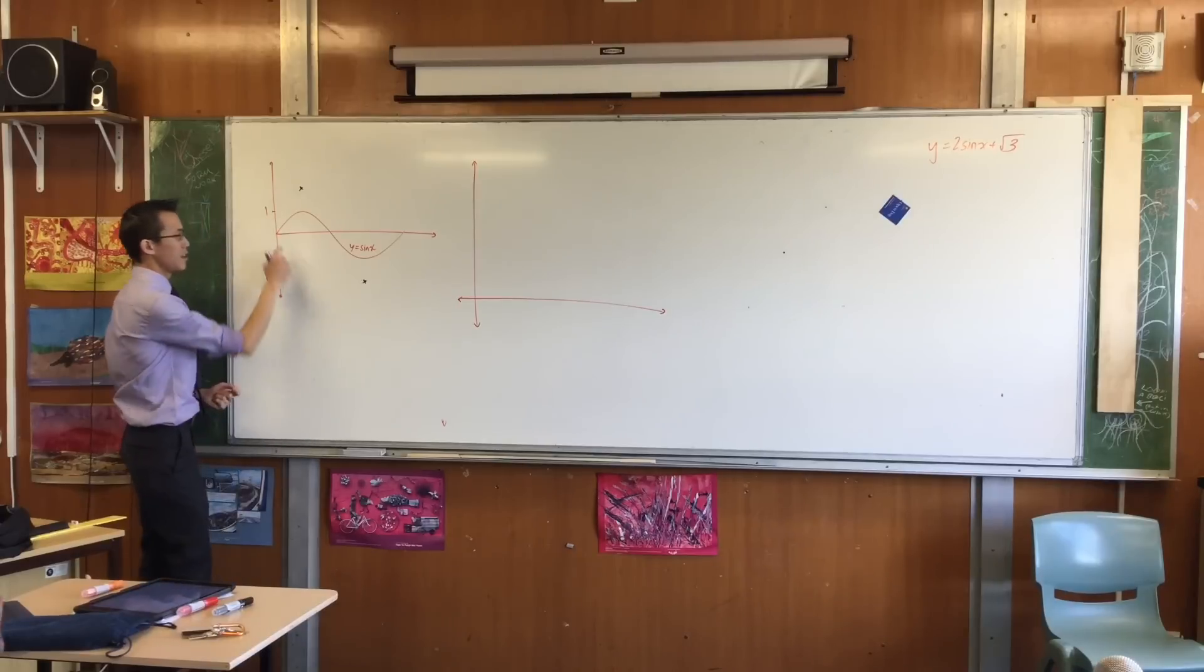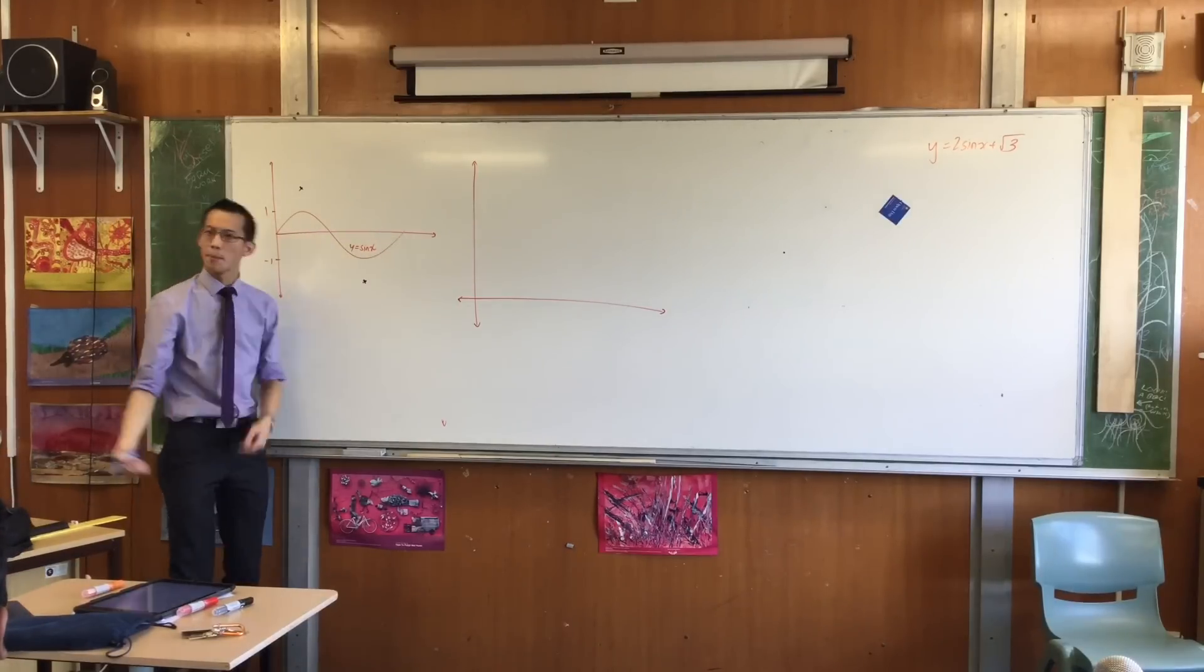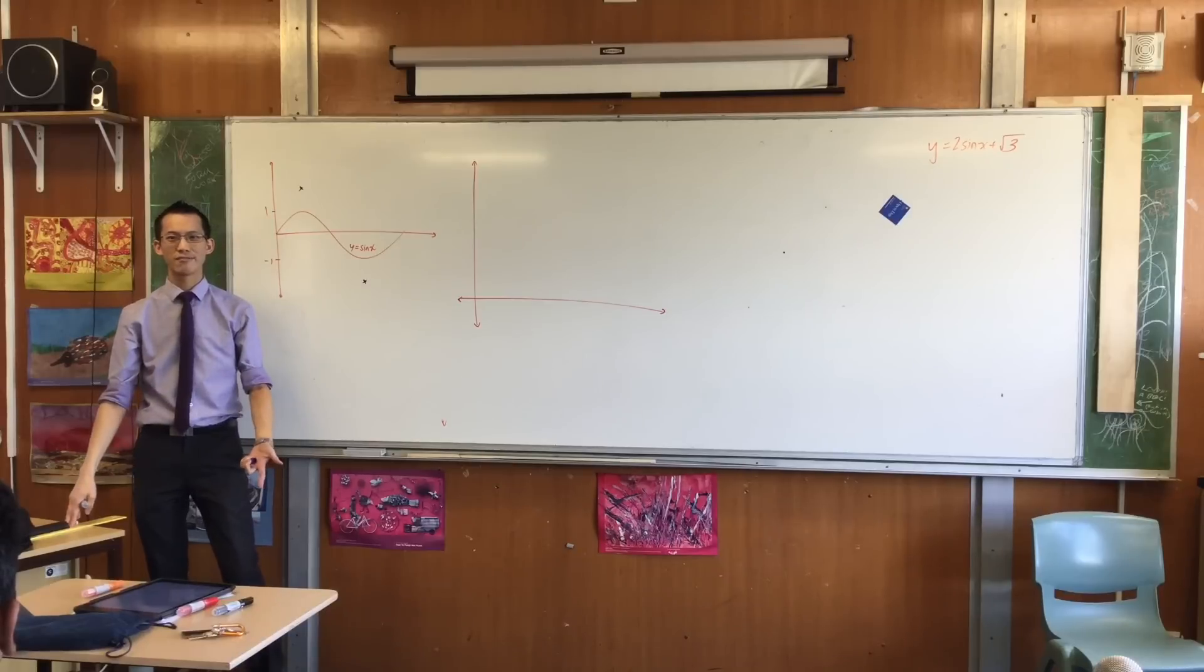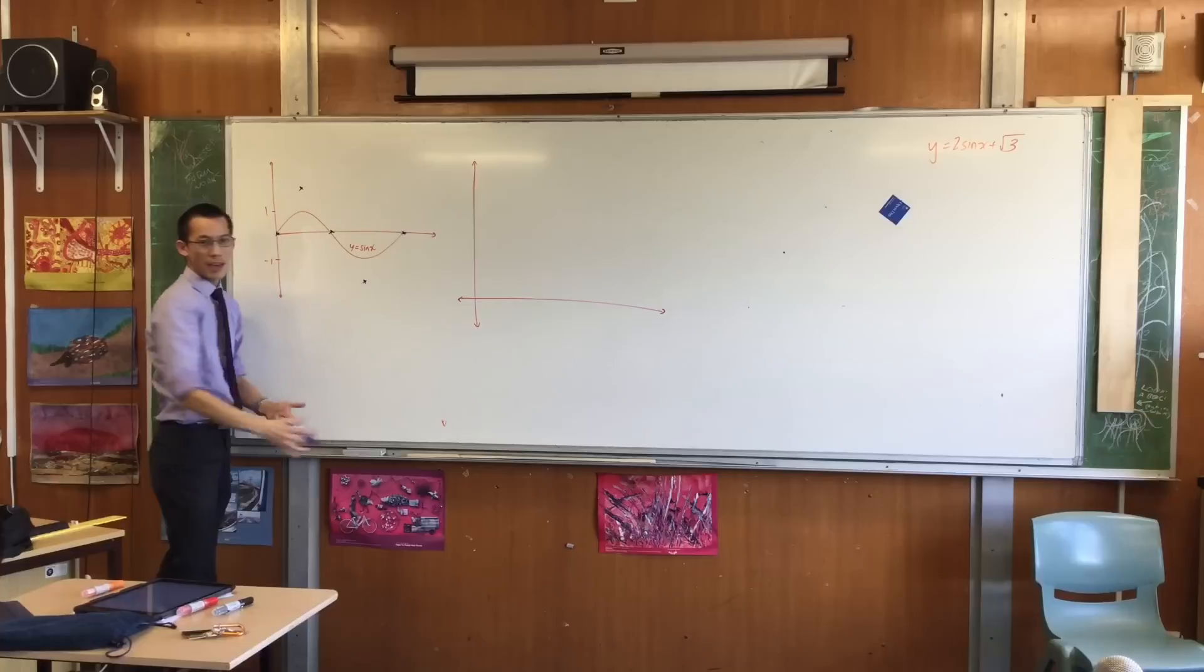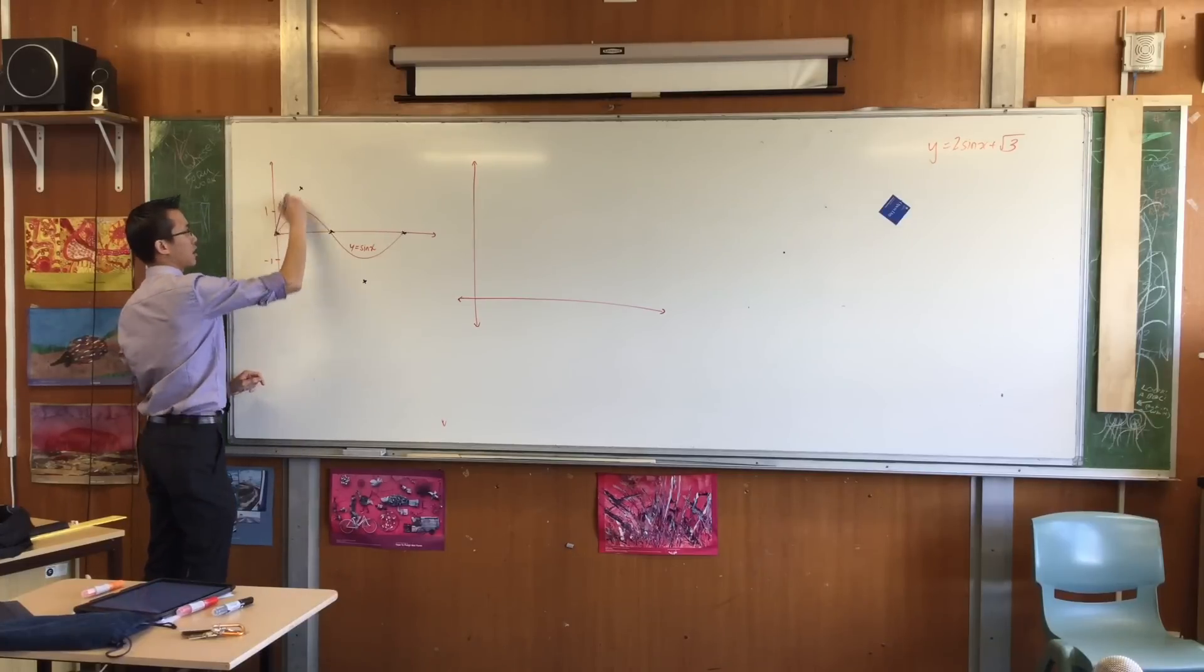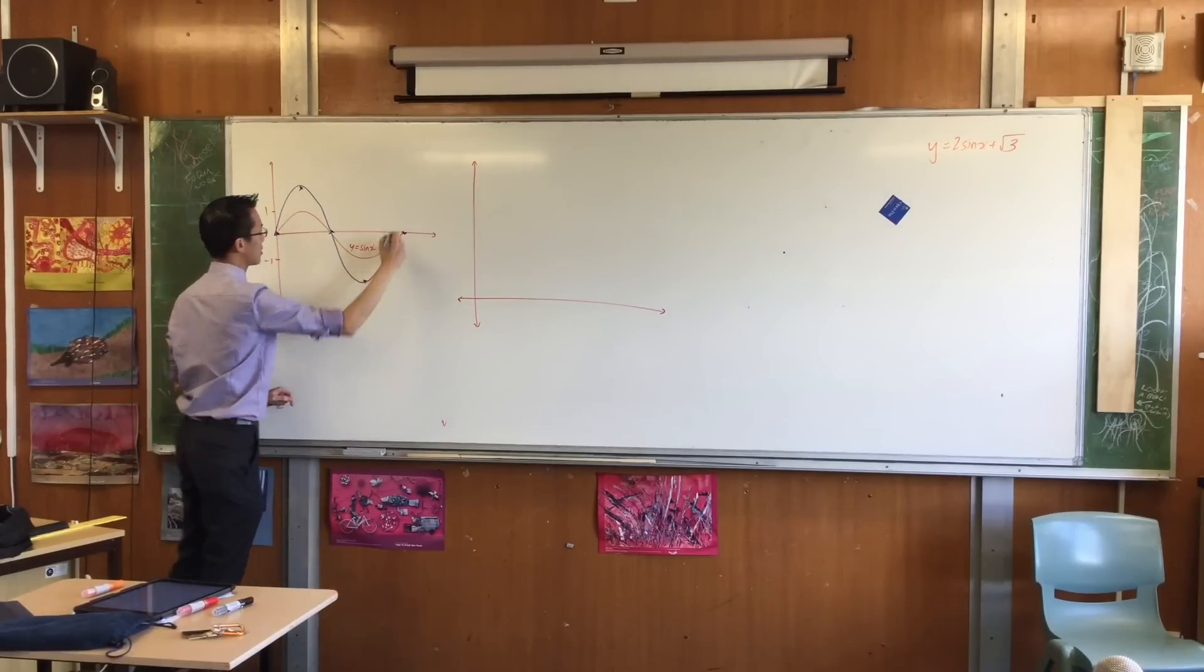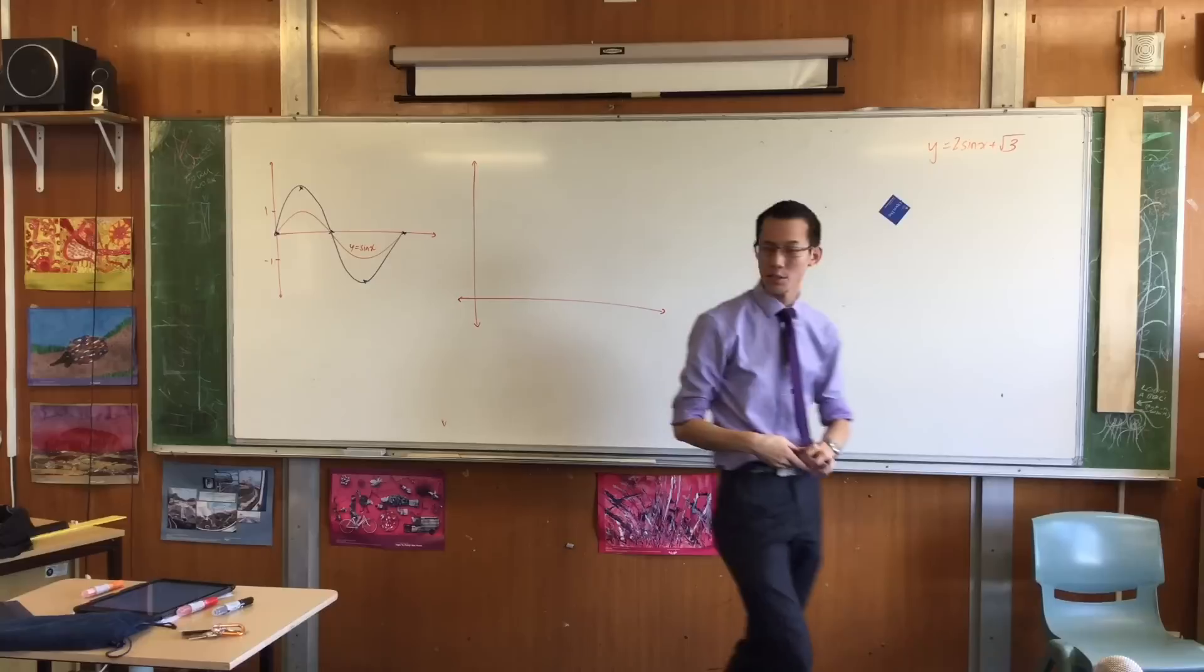Once you've got that in place, zeros, when you double zeros, what do you get? Zero. So they're going to stay put: 1, 2, 3. And now you've got the shape, right? So I'm just going to connect the dots. That's good enough for me. So this is 2 sine x.